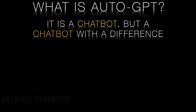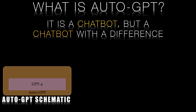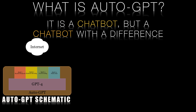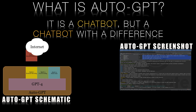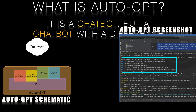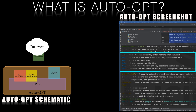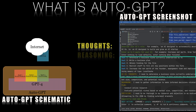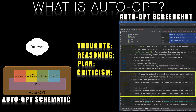Auto-GPT is an AI chatbot that uses GPT-4 from OpenAI as its foundation and it can act autonomously without the need for human user input. It can perform various actions such as searching the web, saving files and much more. Auto-GPT can take a goal from a user and work towards it by breaking it down into smaller steps called thoughts, reasoning and criticism.